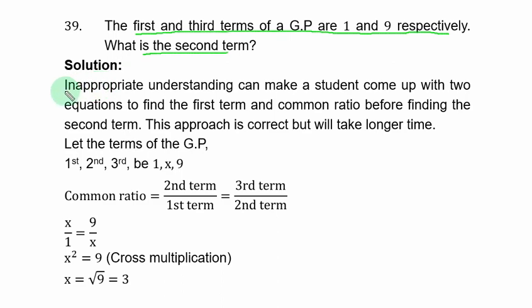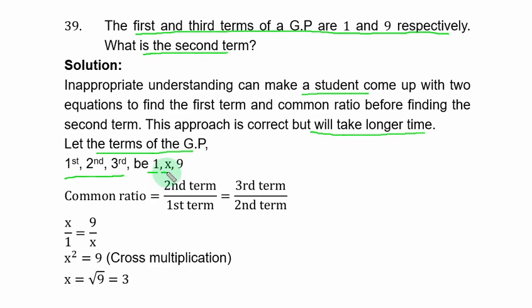An inappropriate approach would be to form two equations to find the first term and common ratio before finding the second term — correct but time-consuming. Instead, let the terms of the GP be: first term = 1, second term = s, third term = 9. The common ratio equals second term over first term, which also equals third term over second term. So s/1 equals 9/s.